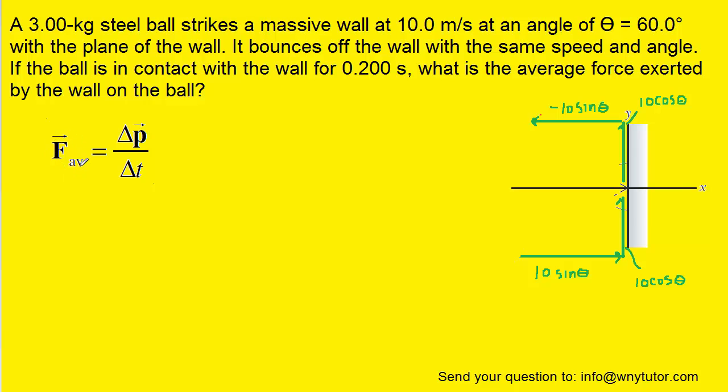Now, to calculate the average force, we're going to use the following equation that we learned in this chapter. We have the change in momentum divided by the change in time. Notice the change in time was given to us as being 0.2 seconds. Now, it's important to note that because force is a vector quantity, we're going to have to make this calculation twice, once for the x direction and another time for the y direction.